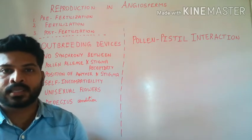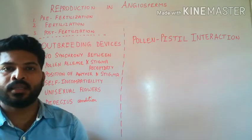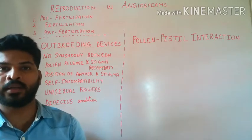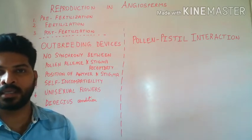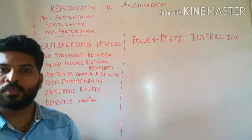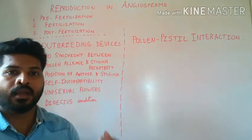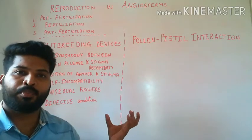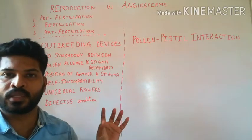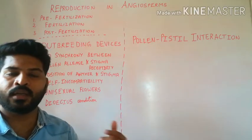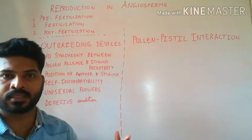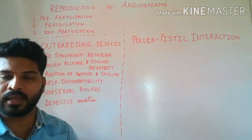Welcome back. We are discussing the lesson reproduction in flowering plants, which can be divided into three stages: pre-fertilization events, fertilization, and post-fertilization events. The pollen grains are transferred from the anther to the stigma with the help of wind, water, insects, and animals by the process of pollination.